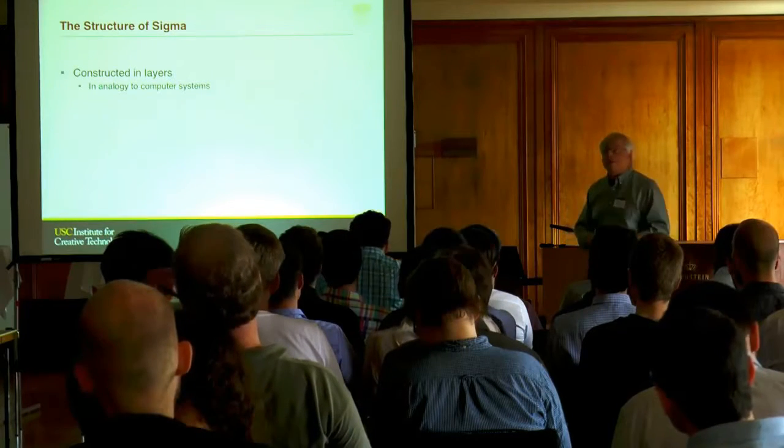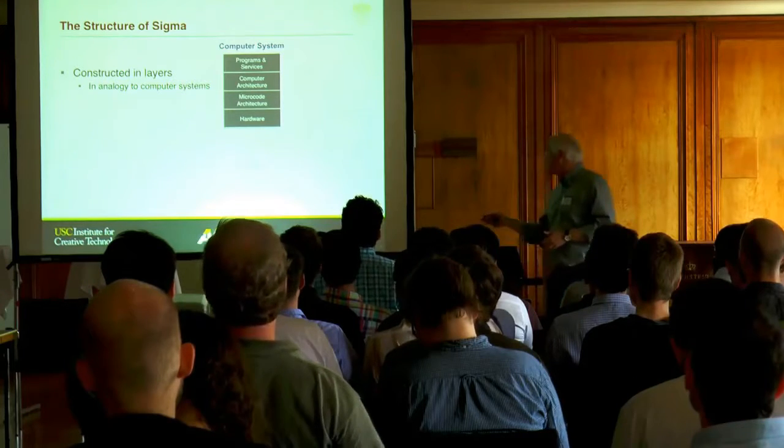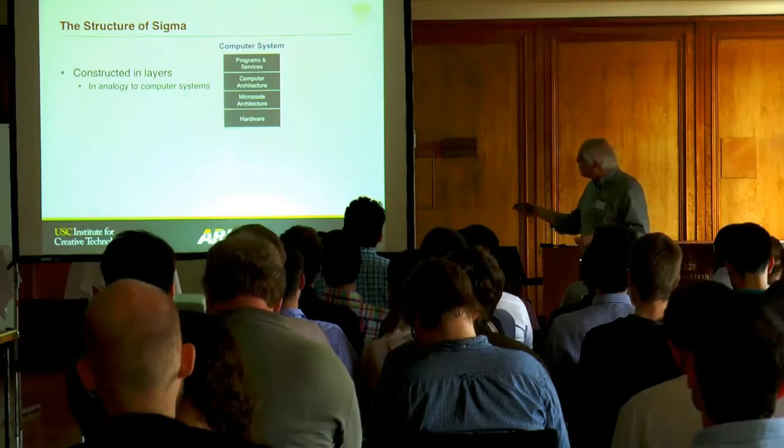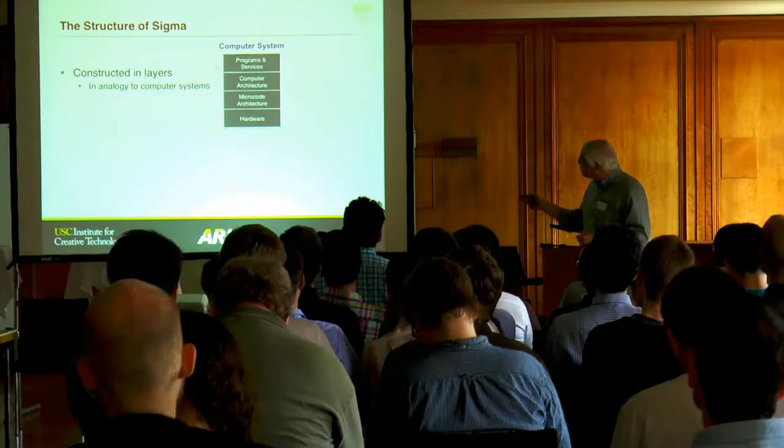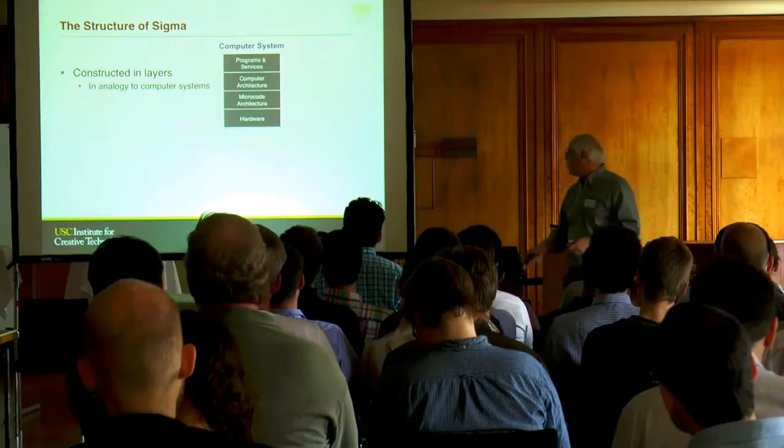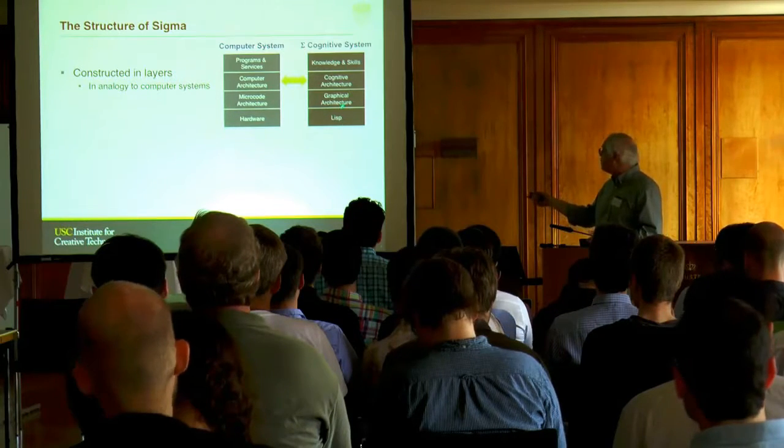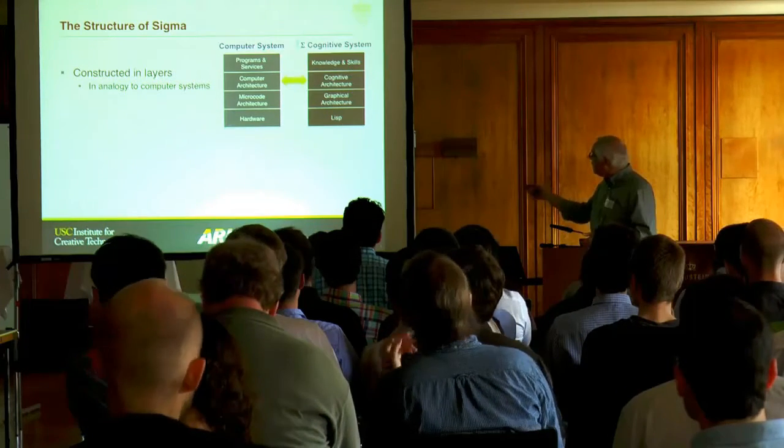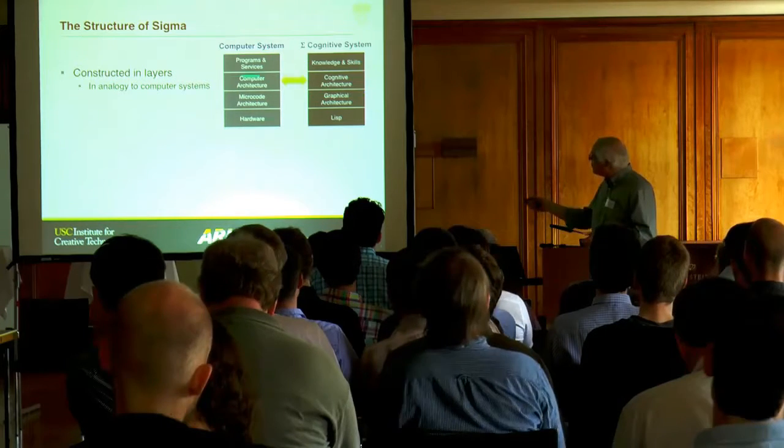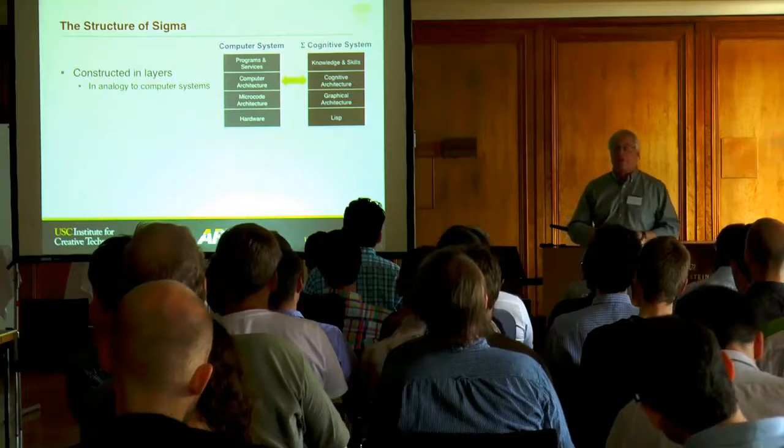As a system, Sigma is structured in layers in analogy to computer systems. So in a computer system you might have hardware, microcode or firmware, a computer architecture, programs and services. Sigma cognitive system looks like graphical architecture, cognitive architecture, and knowledge and skills. The cognitive architecture roughly maps onto the computer architecture, providing the basic level of programmability.